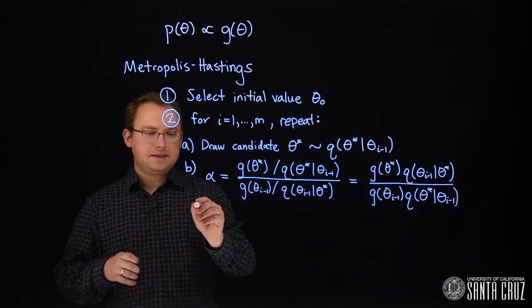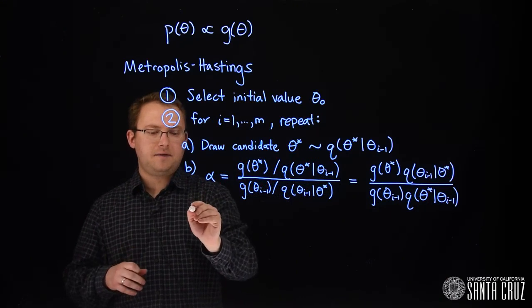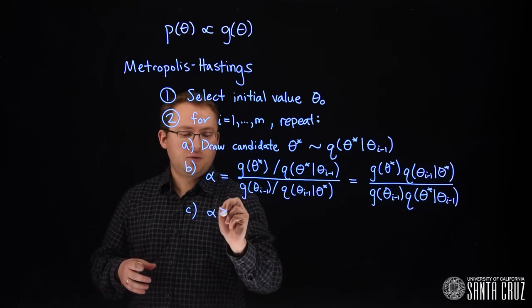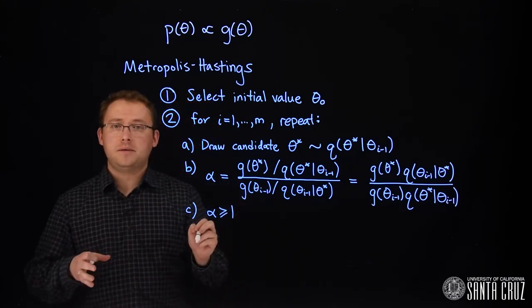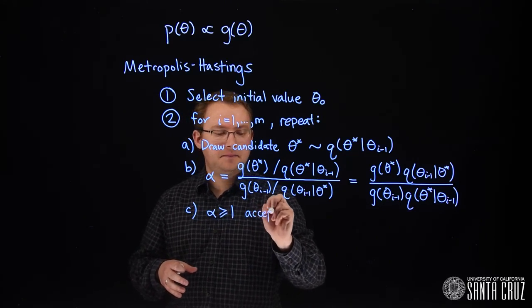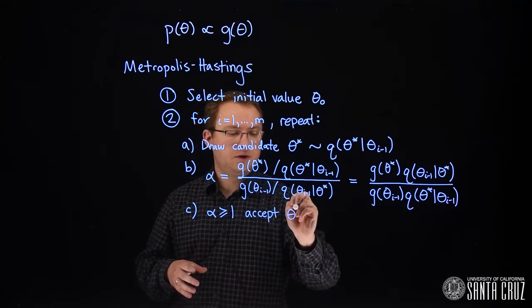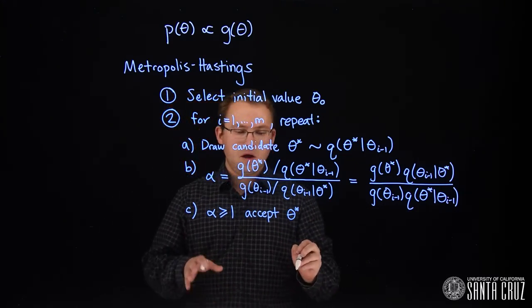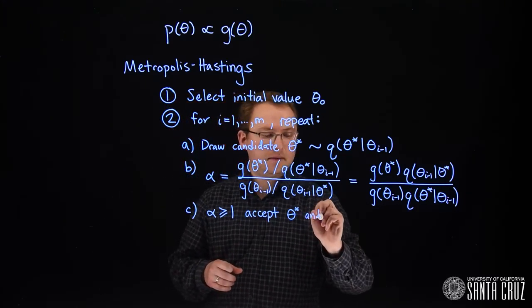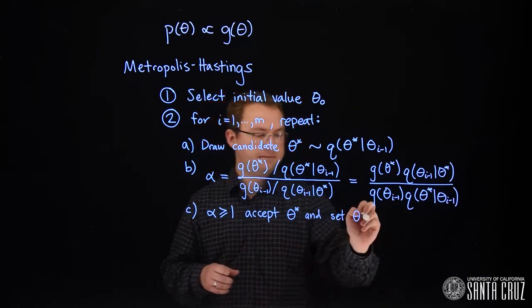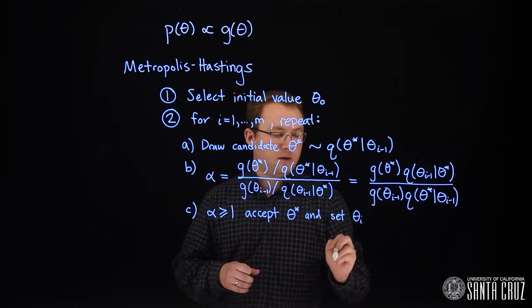The next step, once we've calculated alpha, is to check alpha. If it's greater than or equal to 1, then we're going to accept the candidate. So we're going to accept the candidate theta star and set our current iteration of theta, so that'll be i, will be that candidate value.